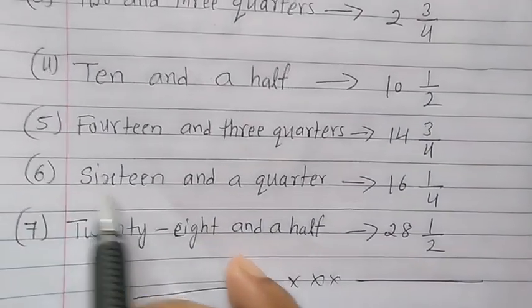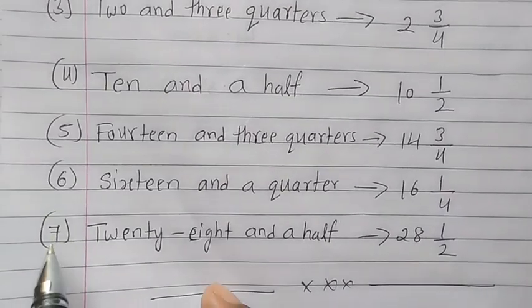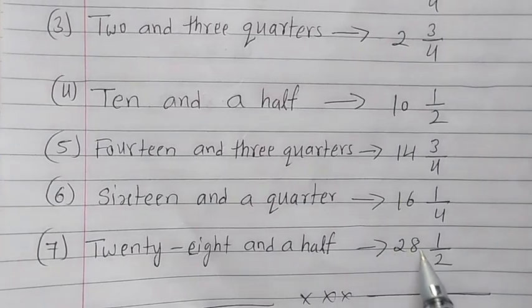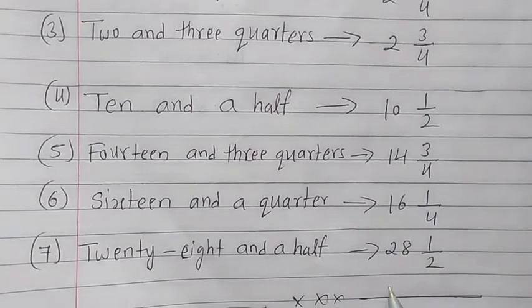Sixth question, sixteen and a quarter, that means 16, 1 upon 4. Seventh question, twenty-eight and a half, so write 28, 1 upon 2. Thank you very much.